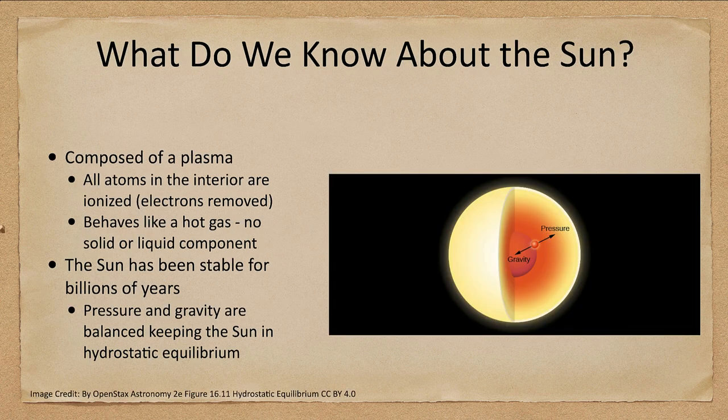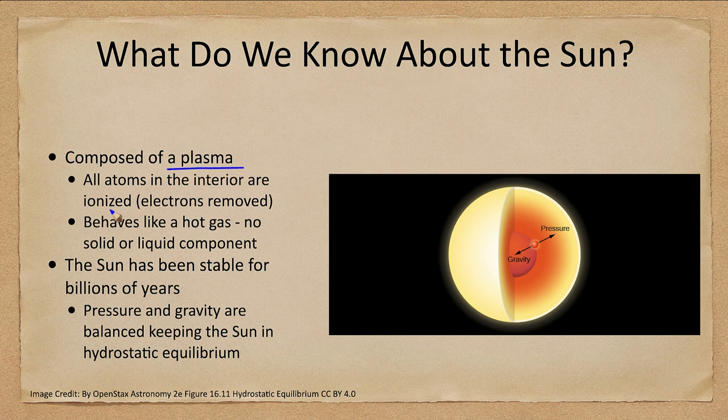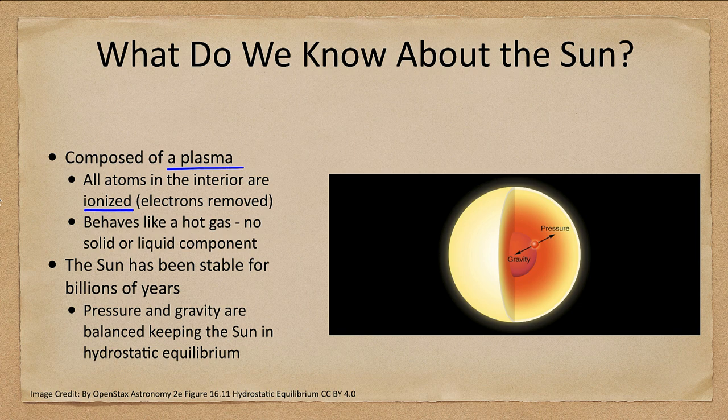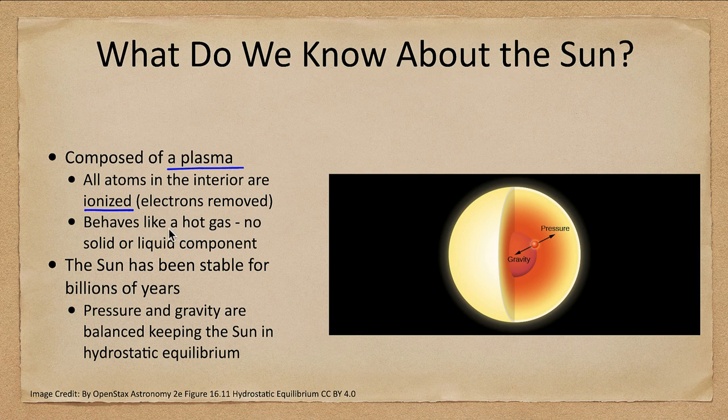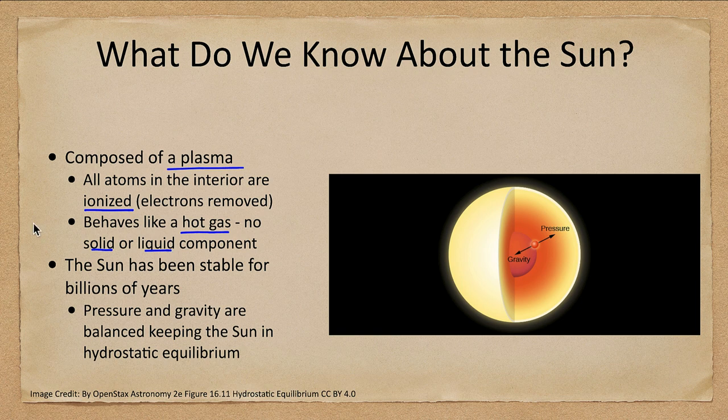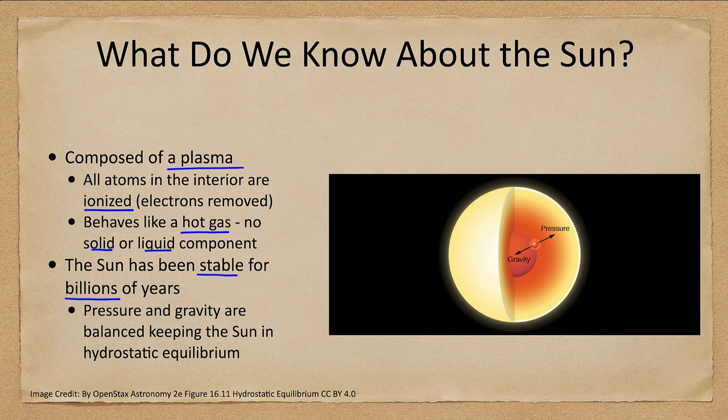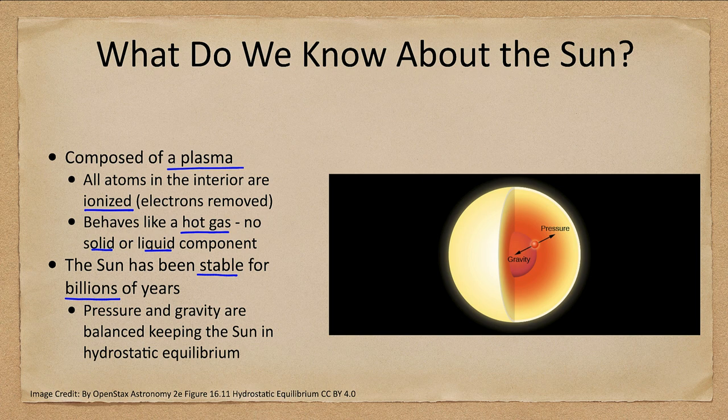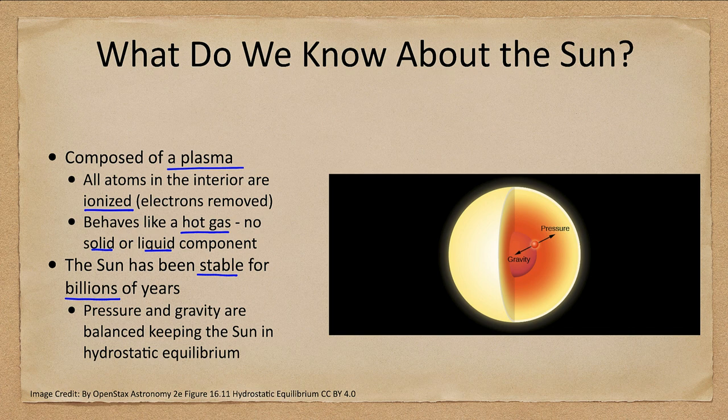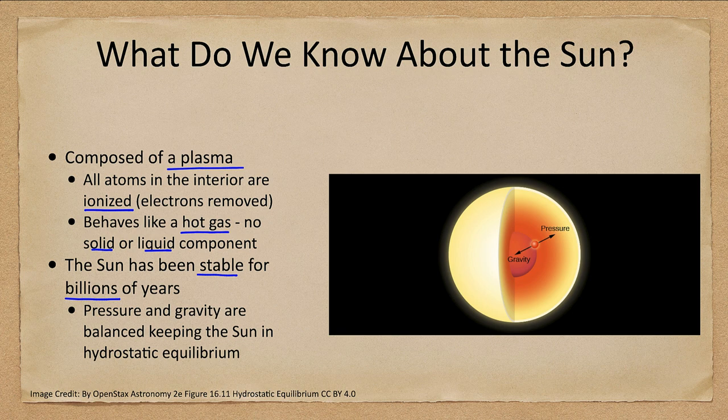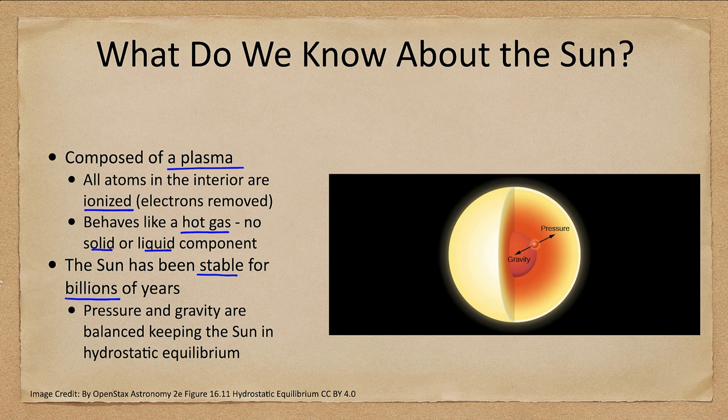So what do we know about the Sun? Well, we know the Sun is made of a plasma, which means that the atoms are ionized and have electrons removed. By the time you get down to the center, everything is ionized. There are no electrons attached to any atoms regardless of what atom they are. And it behaves like a hot gas. It has no solid, no liquid. It is completely a hot gas because of the incredibly high temperatures that exist. We also know that the Sun has been stable for billions of years. How do we know this? Well, we're still here. If the Sun were changing much in terms of temperature, life on Earth would not be able to survive.